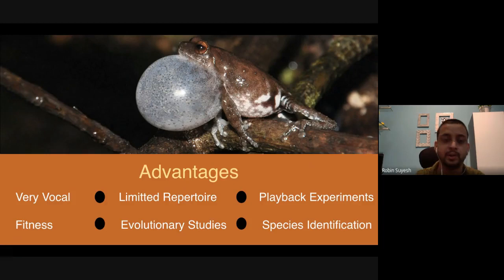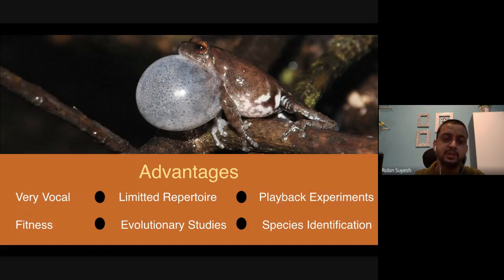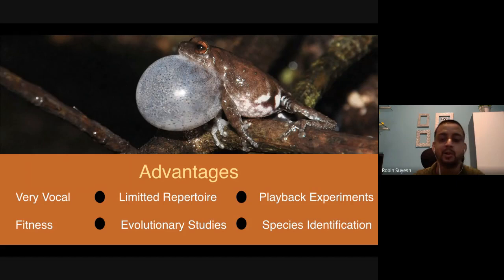The second important aspect is that frogs have a very limited repertoire compared to mammals or birds, which have more complex vocalizations. Because frogs have a limited repertoire, you can more easily interpret what exactly that signal is being produced for. In mammals and birds, even if you record large varieties of sound, it's very difficult to decode what exactly the sound is being produced for. This is one of the things that makes amphibians an interesting subject — not too many sounds, but they produce them in large quantities.